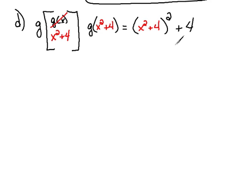So now it's just a matter of cleaning it up, simplifying it. Again, what does it mean to square something? It means that we write it out twice, multiply it to itself. If you don't do that, you will lose the middle term.